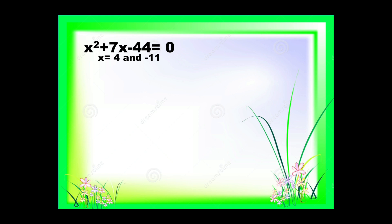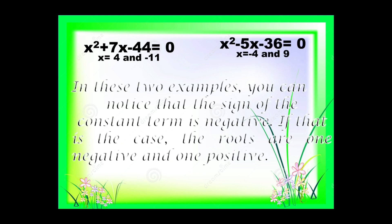Considering examples 3 and 4, the sign of the constant term is negative — we have negative 44 and negative 36. If that is the case, the roots are 1 negative and 1 positive. To repeat: if the sign of the constant term is negative, the roots are 1 positive and 1 negative.